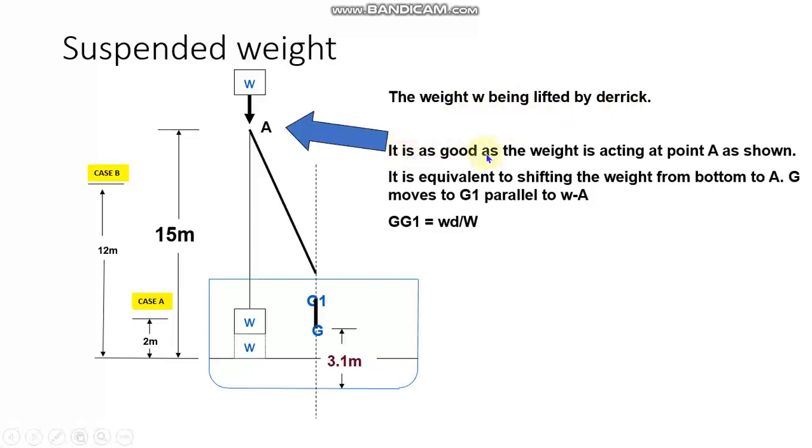Now we need to understand this fundamental thing when the weight W is being lifted by the derrick. In effect, it is as good as the weight is acting at this point A, where this lifting is happening, the fulcrum of this moment. So we can assume that this weight is acting at point A. So it is equal to shifting the weight from bottom to A. So we can also say that GG1 will be parallel to WA.